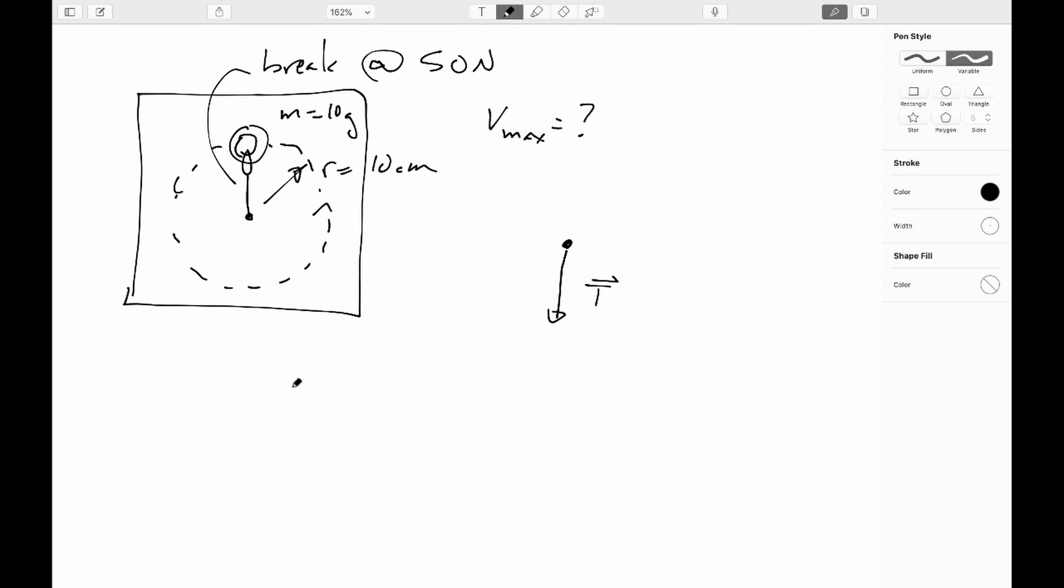So Newton's second law will tell me then that since the net force is my tension, I can say that that's equal to the mass of the washer times its acceleration, but since we know it's going in a circle we know that that acceleration is also v squared over r. So, I can say v squared is tr over m or the speed of the washer will be the square root of tr over m.